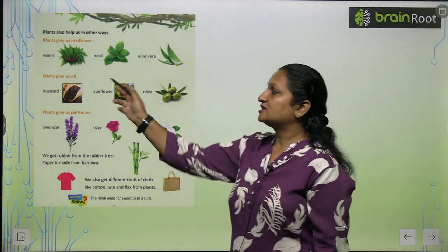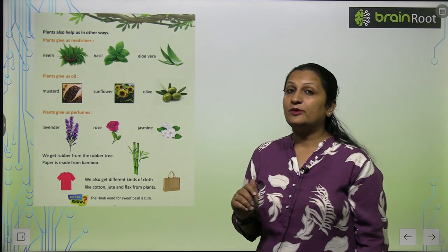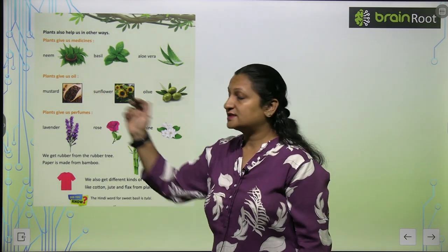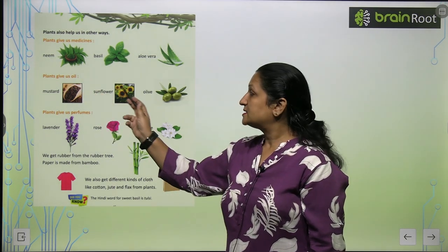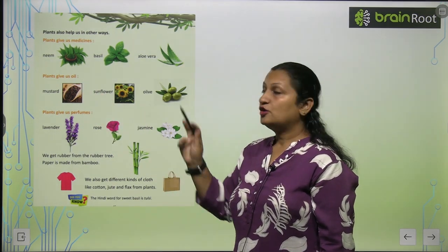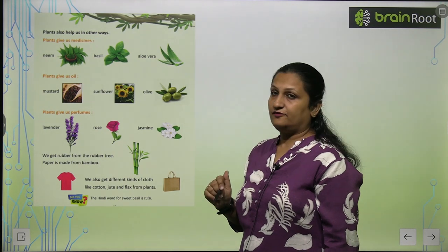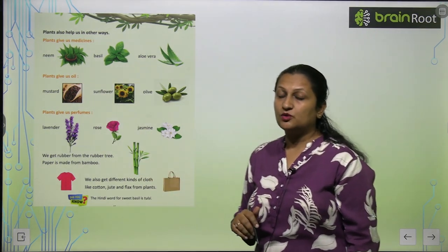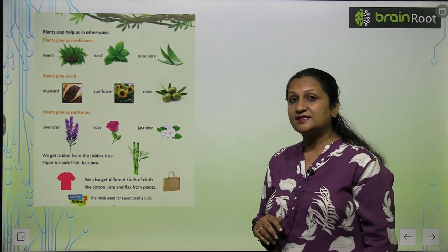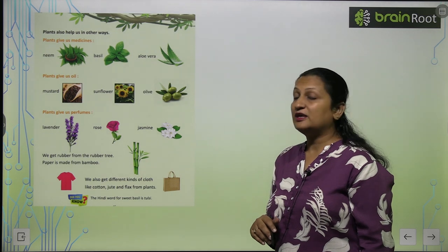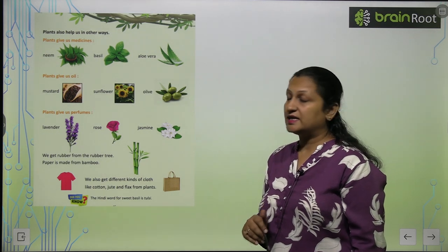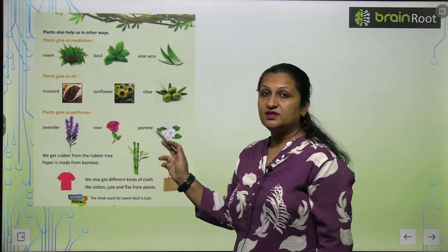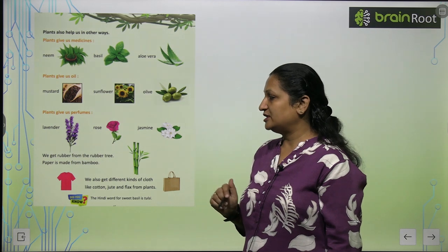Plants give us oil. Plants like mustard, sunflower, and olive give us oil. Plants also give us perfumes. Flowers like lavender, rose, and jasmine give us perfumes.